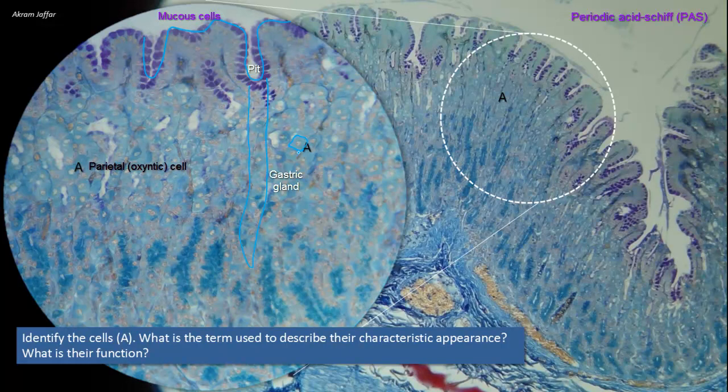These parietal cells also produce the intrinsic factor, which is necessary for the absorption of vitamin B12 in the terminal ileum.